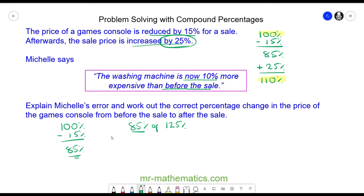To work out the overall change we convert these two to multipliers, which is 0.85 multiplied by 1.25, which is 1.0625. We take away the original 100%, or 1, and we get the percentage change of 6.25%, which is an increase overall.